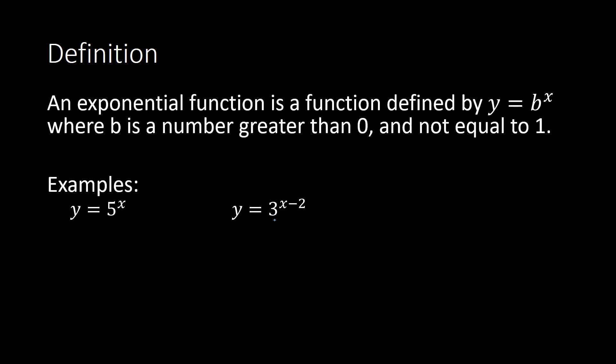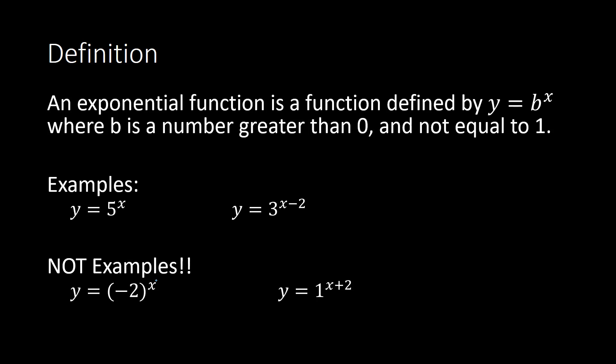For example, something like y equals 5 to the x power, or y equals 3 to the x minus 2 power, where the exponent is the variable. Notice that the base is a positive number not equal to 1. Here 5 is positive and not equal to 1, and 3 is positive and not equal to 1. Whereas negative 2 to the x power is not a positive number, so this would not be an exponential function.